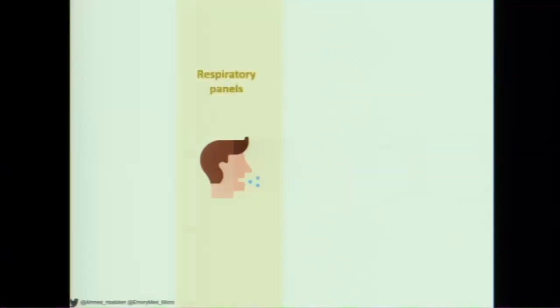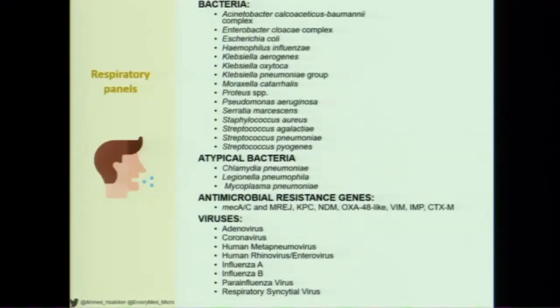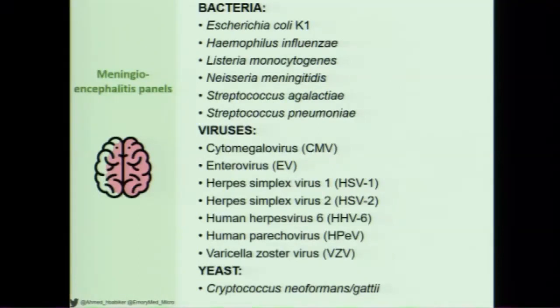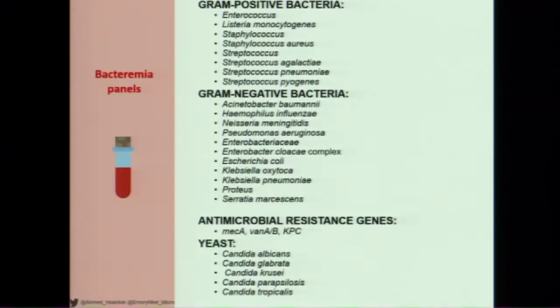Manufacturers have bent these multiple targets into syndromic panels. The gastrointestinal panel contains a multitude of bacteria, parasites, and viruses that cause diarrhea. The respiratory panel has bacteria, atypical bacteria, viruses, plus antimicrobial resistance genes — all potential pneumonia pathogens. The meningoencephalitis panel includes garden-variety meningitis bacteria, viruses, and cryptococcus. The bacteremia panel has gram-positive, gram-negative organisms, antibiotic resistance genes, and even yeast. These examples are BioFire panels, but different companies offer similar concepts.